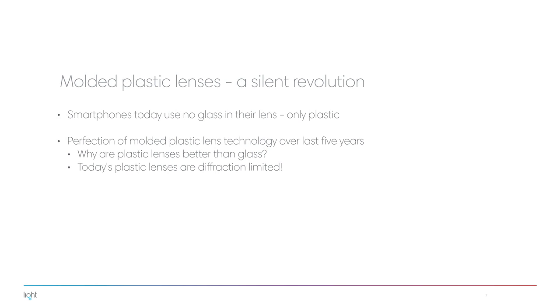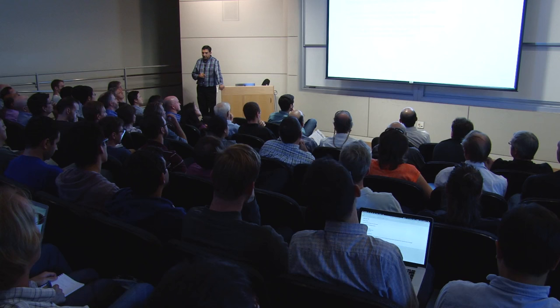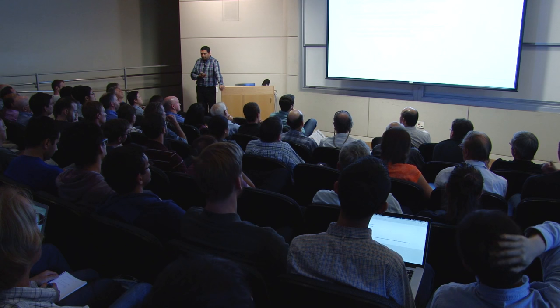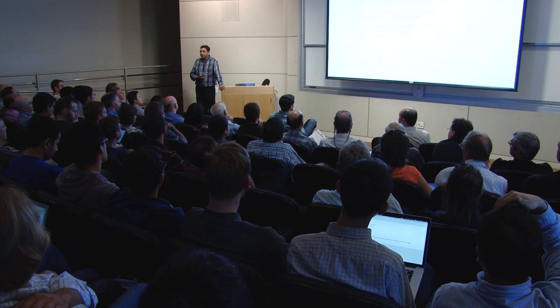Most people do not recognize this, but your smartphone today has no glass lens in it at all — it is only plastic. This change happened over the last five years; molded plastic lenses were not very good five years ago, but today the technology has virtually been perfected. If you take a Canon camera with a red ring around the lens — the L series — it uses what Canon markets as a fluorite element with special optical properties. So you might wonder: how can plastic lenses be very good if big companies use exotic materials?